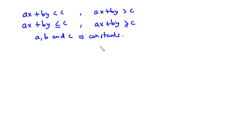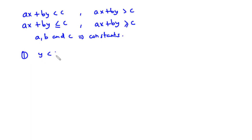A solution to a linear inequality is the pair of numbers x and y that satisfy the inequality. The rules for finding the solution set of a linear inequality are the same as those for finding the solution to a linear function. Let's consider the inequality y < 12.